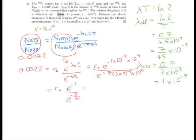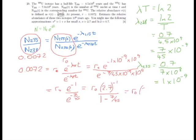We've got some approximations to use here. e is approximately equal to 2.7, which means e to the minus 1 is 2.7 to the power of minus 1. And for small values of x, e to the x is approximately equal to 1 plus x. So e to the minus 7/45 is approximately 1 minus 7/45, which equals 38/45. This gives us r₀ times 2.7 to the minus 1, divided by 38/45, which equals r₀ times 2.7 to the minus 1, times 45/38.